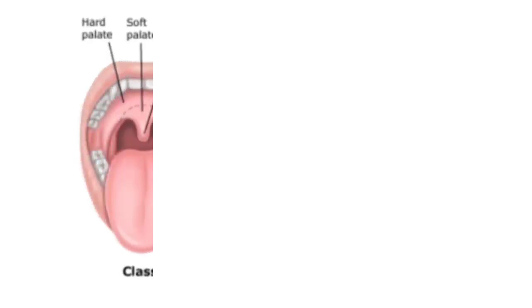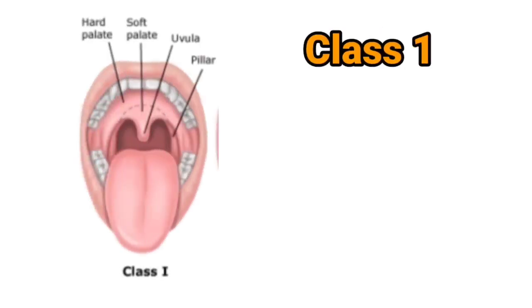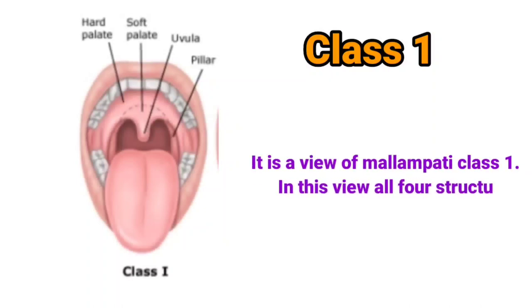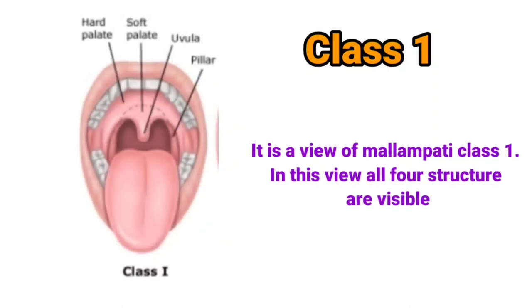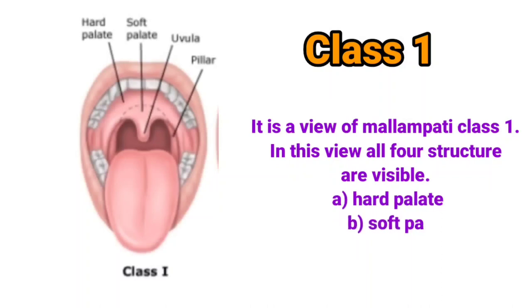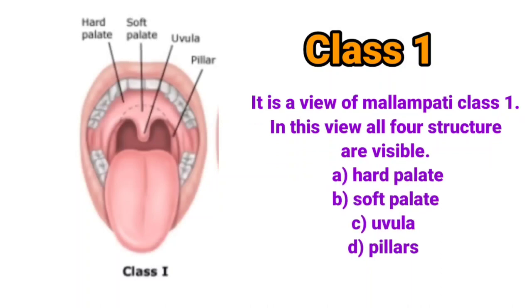Malampati Class 1. In this view, all four structures are visible: hard palate, soft palate, uvula, and pillars.